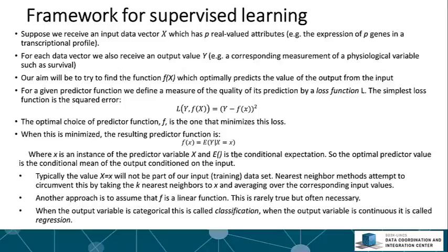Now typically, the value of the input that we want will not be part of our training data set. So the most direct way to approach this situation is to look at those values of your input data that are closest to the value that you want, and then find the mean value of the corresponding outputs in that case. And this is called the nearest neighbor approach.